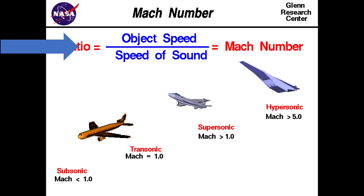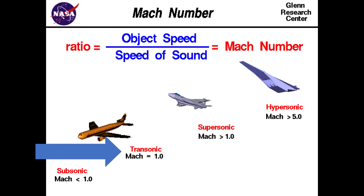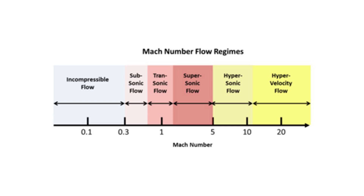A way to approximate when a fluid becomes compressible is to use a ratio known as a Mach number. A Mach number is just a ratio of the object's speed over the speed of sound. So in other words, the speed of sound is Mach 1. The regime at which a fluid is considered compressible is Mach 0.3 and above.